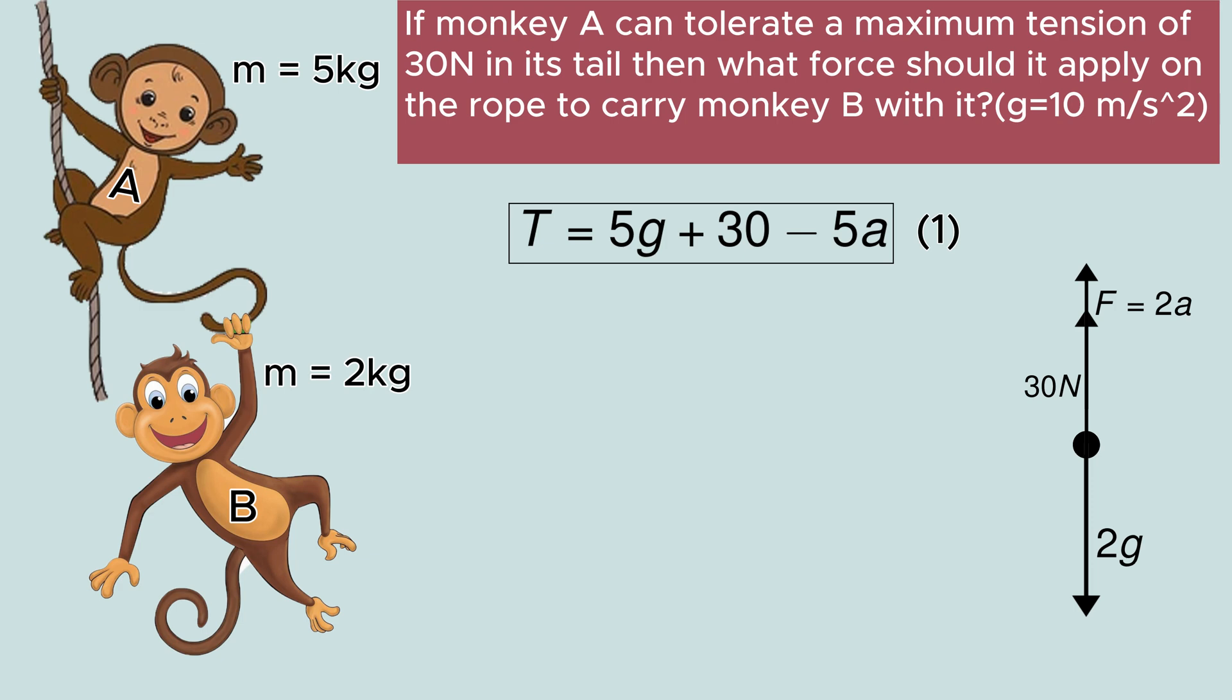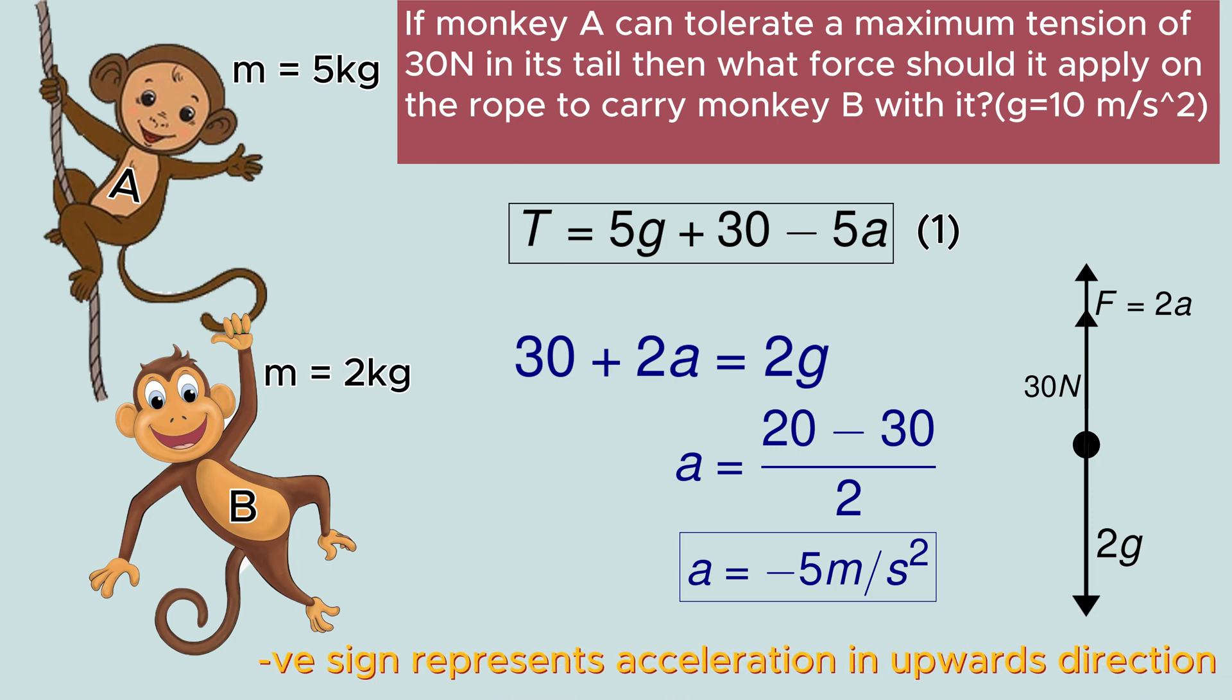Therefore, we can write 30 plus 2A equals 2g. From here we can find A as minus 5 meters per second square. Here negative sign just signifies the acceleration in the upward direction.